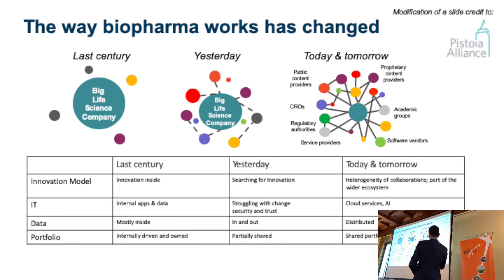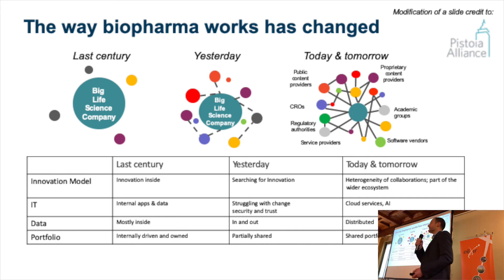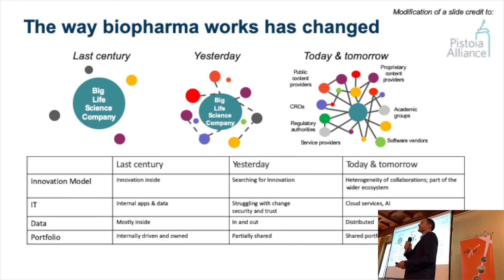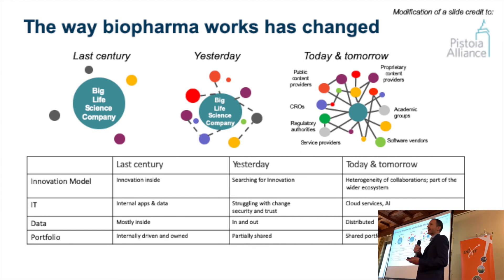Starting with the context — this gives you an overview of how the landscape has changed over the years. On the left-hand side, you have the way big pharma used to operate: a very closed system where everything was developed in-house — the IT, the discovery research, everything very tightly guarded. As things evolved, interactions started to happen. Today, a lot of industry has realized they need to collaborate, and data exists outside industry and needs to be ingested and integrated with their systems, creating a huge amount of curation challenges.